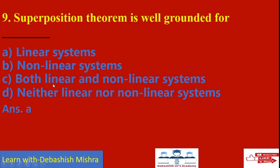In superposition theorem, it is valid for: linear system, nonlinear system, both linear and nonlinear system, or neither? The answer is (a): linear system. Superposition theorem is valid only for linear systems because the effect of a single source cannot be individually calculated in a non-linear system.